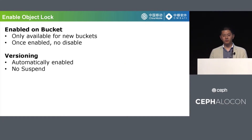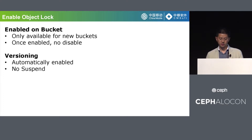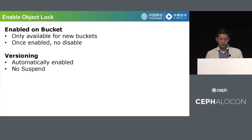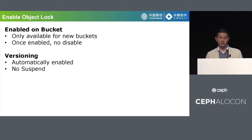Before we can lock any object, we have to configure a bucket to use S3 object lock. To do this, we must specify when we create the bucket that we want to enable object lock. After we have configured a bucket for object lock, we can lock objects in that bucket using a retention period, legal hold, or both. We can only enable object lock for new buckets — there is no S3 API to turn on object lock for an existing bucket. When we create a bucket with object lock enabled, it will automatically enable versioning for the bucket. And after we enable object lock, we can't disable it or suspend versioning for the bucket anymore.